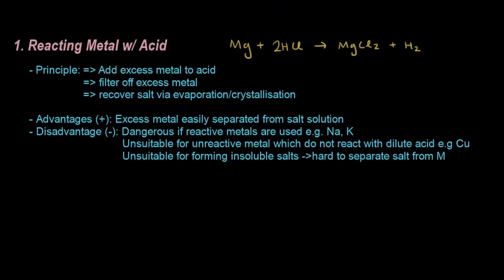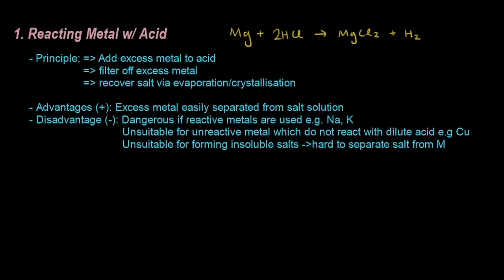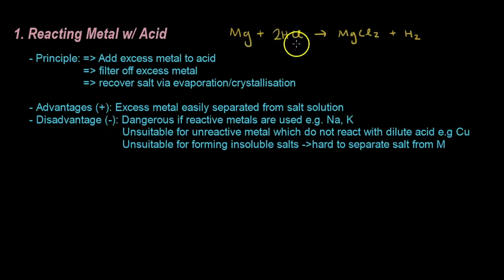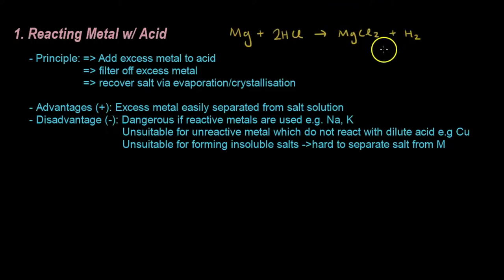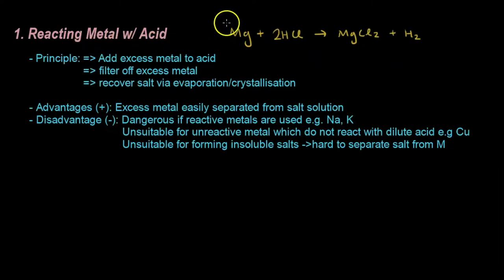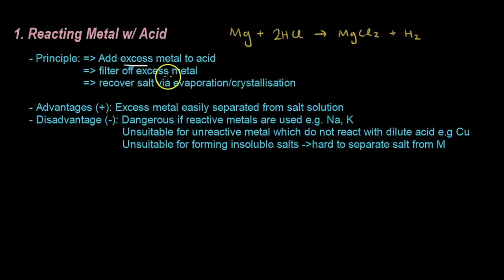This is the metal with acid reaction we covered in the previous video — magnesium metal reacting with hydrochloric acid to give a salt and hydrogen gas. The hydrogen gas is not important here; the salt is what we want. The principle is to add excess metal to acid — you add a lot of metal, the acid is in limited amount — then filter off the excess metal.